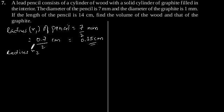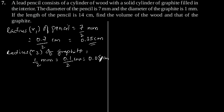Radius R2 of graphite is equal to 1 by 2 mm which is equal to 0.1 divided by 2 cm or 0.05 cm, and height h of pencil is equal to 14 cm.